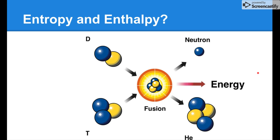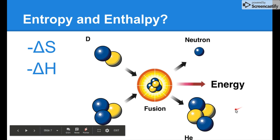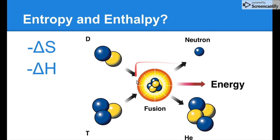What's the entropy and enthalpy for this reaction? For entropy, we're going to less disorder — we have two molecules and end up with one molecule after the reaction, so that's less disorder: negative delta S. For energy, energy is a product of this reaction, not a reactant — energy is coming out, so we're losing energy: negative delta H.